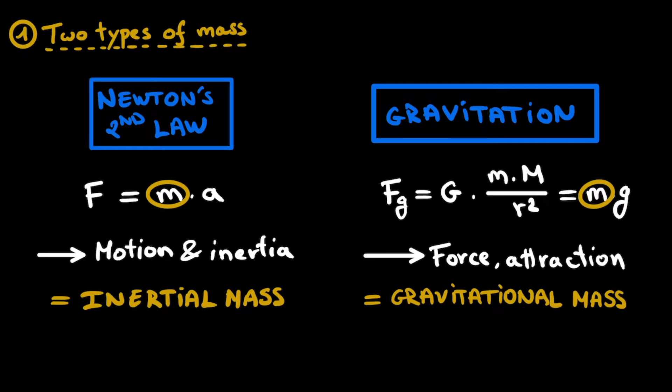In the same sense that electric charge is the charge of the electric force. Now, you probably know that both of these masses are equal to each other, or they are basically the same property. But it is important to stress their difference because it's quite subtle. The inertial mass is the property of an object that tells you how hard it is to move it around, whereas the gravitational mass is the property of an object that tells you to what extent it is attracted to other objects.